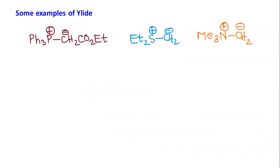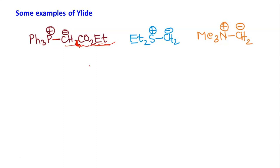Now let's see some examples of ylides. Phosphorus ylide: PPh₃ plus CH₂CO₂Et gives a ylide where carbon carries a negative charge and also has one H and one CO₂Et group. In the second case we have a sulfur ylide — with two ethyl groups, sulfur makes three bonds total and carries a positive charge. Phosphorus has four bonds and carries a positive charge. The common oxidation states are +3 and +5 for phosphorus (Group 15), and +4 and +6 for sulfur (Group 16).